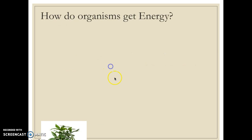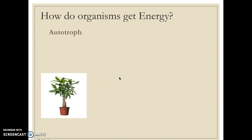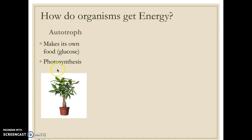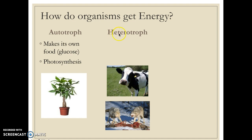We also need to know how organisms get their energy — specifically the difference between autotroph and heterotroph. An autotroph is an organism that makes its own food, for example through photosynthesis. Plants are examples of autotrophs because they have chloroplasts and make their own food. A heterotroph is an organism that must ingest or eat its food to get energy. Autotrophs make their own energy; heterotrophs must ingest their energy.